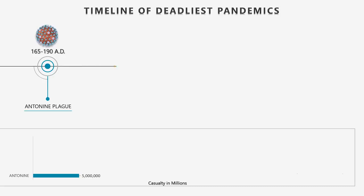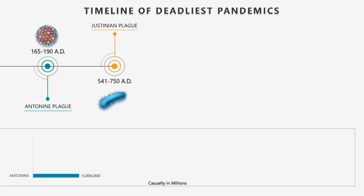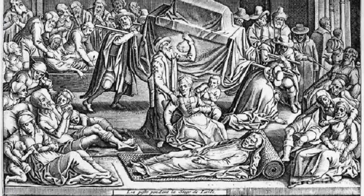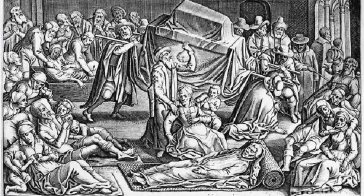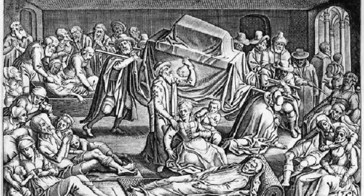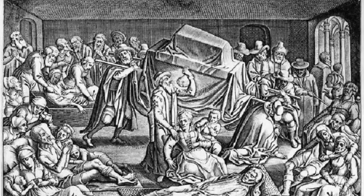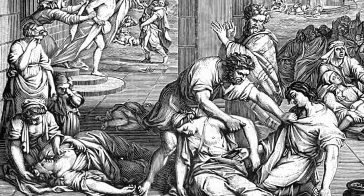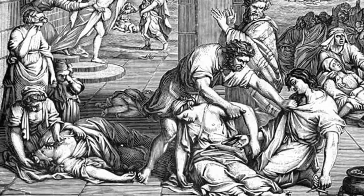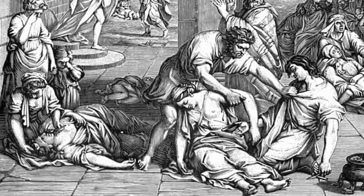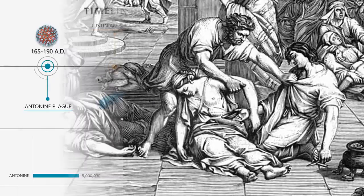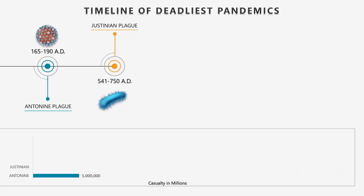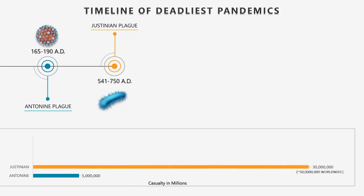At number 19: The Plague of Justinian. A pandemic that afflicted the Roman Empire and port cities around the entire Mediterranean Sea, as merchant ships harbored rats carrying fleas infected with plague. In 2013, researchers confirmed that the cause was a bacterium known as Yersinia pestis. The Plague of Justinian was one of the deadliest pandemics in history, resulting in the deaths of an estimated 30 to 50 million people over two centuries of recurrence — equivalent to as much as half of Europe's population at that time.